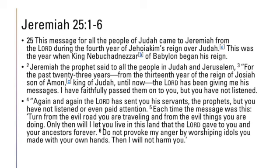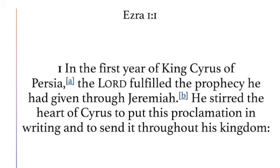Our lesson begins with the return of the people after serving 70 years in captivity in Babylon. Section one deals with the revelation of a stirred heart — Ezra chapter 1 verse 1: 'In the first year of King Cyrus of Persia, the Lord fulfilled the prophecy he had given through Jeremiah. He stirred the heart of Cyrus to put his proclamation in writing and to send it throughout his kingdom.' King Cyrus was chosen by God according to prophecy in Isaiah chapter 45.